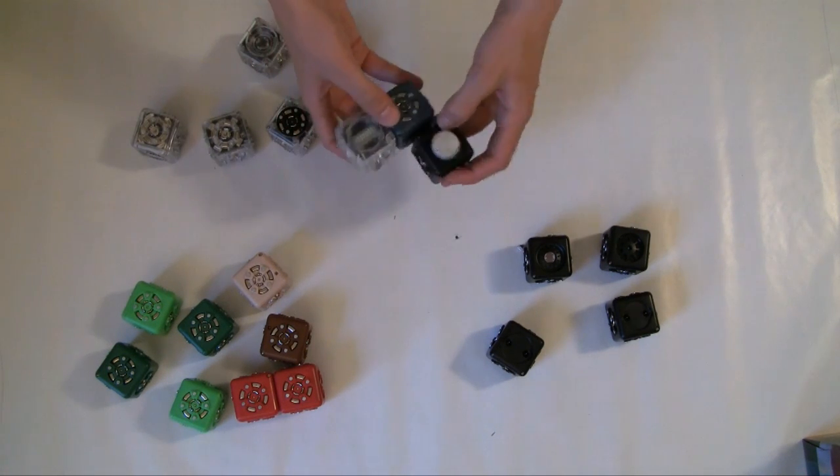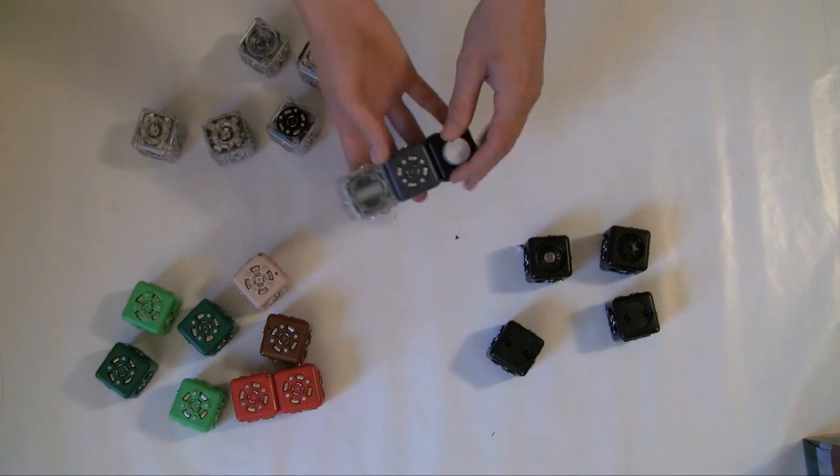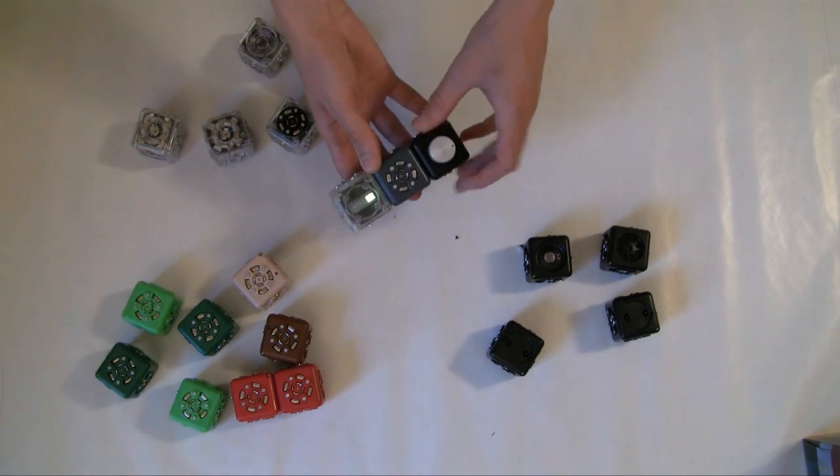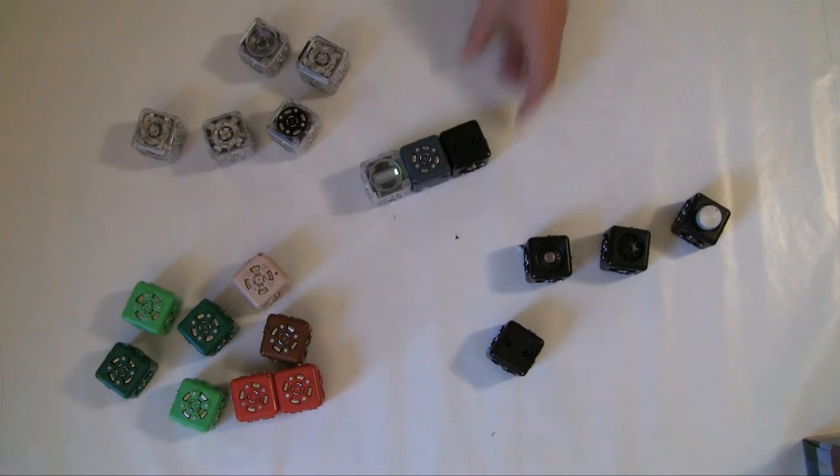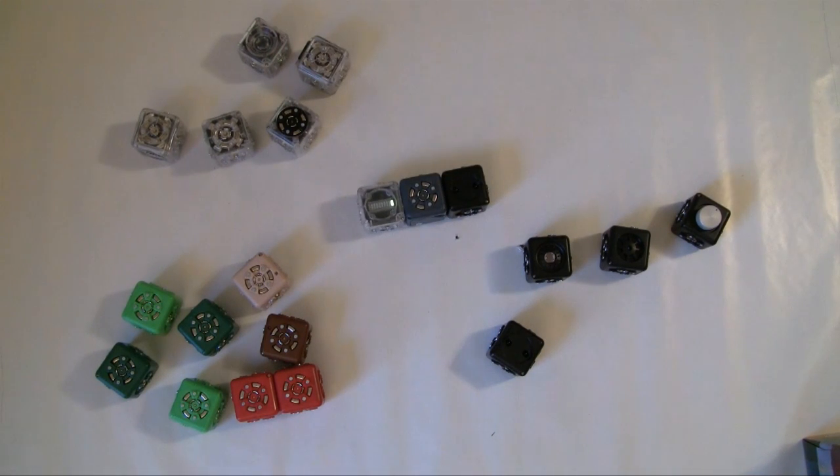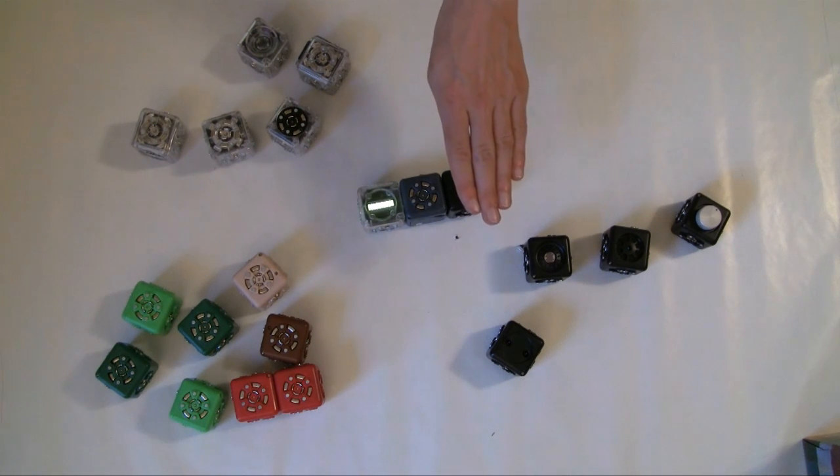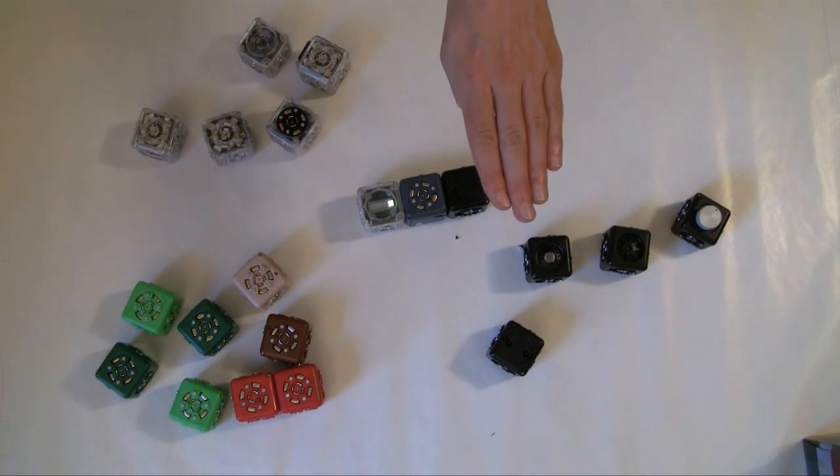We've already seen the dial cube used as the input. But there are some others that you can use for other fancy things. So this is one of the two distance cubes that are included. So when you come close to it, the signal goes up. When you move away, the signal goes down.